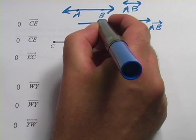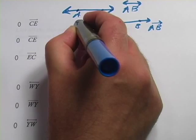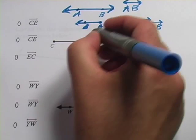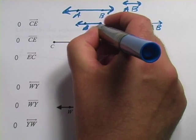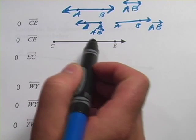You could have a ray that goes in this direction, AB, pointing off that way. That would still be ray AB because it starts at A and goes off to B.